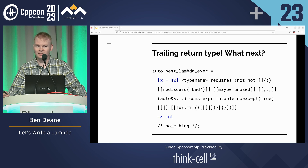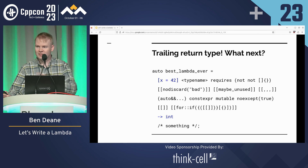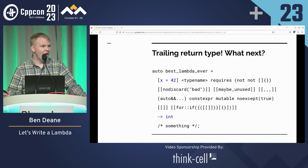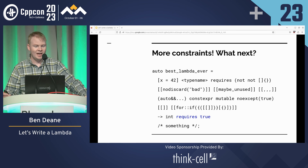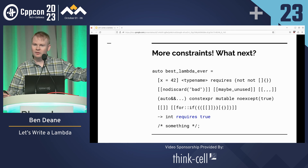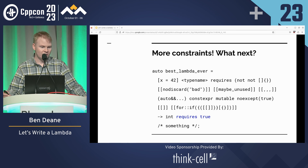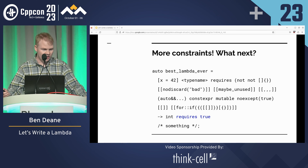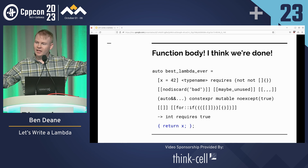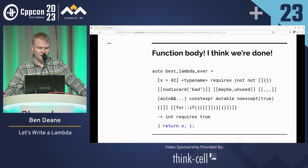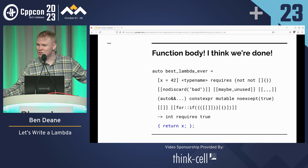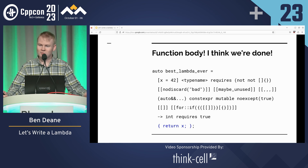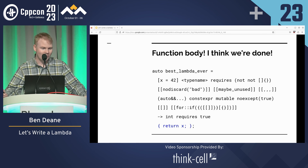What comes next? Requires — someone said requires, and I think that is correct. There's another place we can put constraints, and here we can put things that depend on the parameters. And finally, we get to the function body. So depending on how you count, lambda expressions have about 10 possible parts. I guess what Jason said is true — now we all know everything about C++.